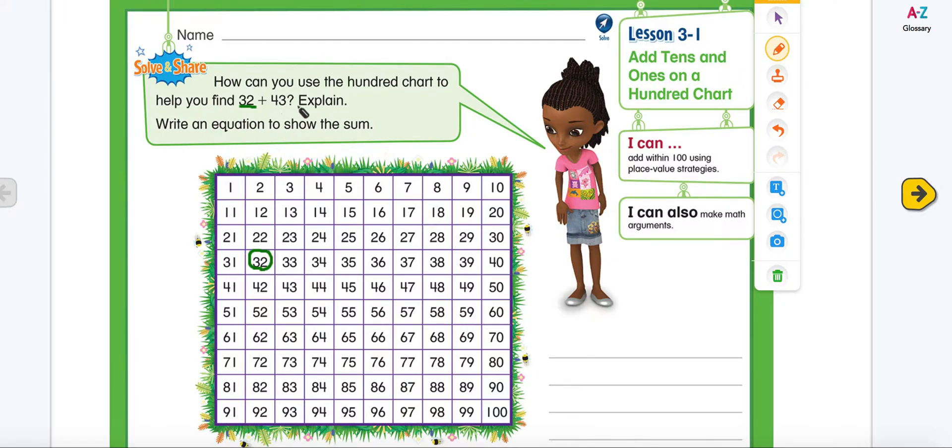Now I'm going to look at this number, 43, that I'm going to add. So I'm going to write it here, my equation, 32 and 43. So what I'm going to do here, I'm going to break this number into tens and ones. 43 has 3 ones and 4 tens. 4 tens means 40.